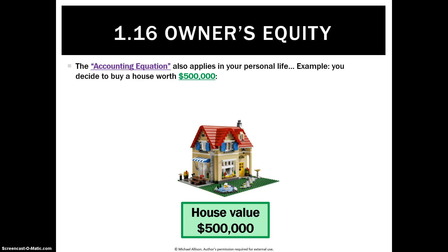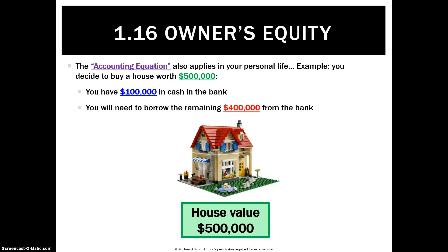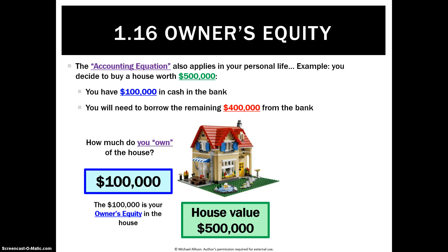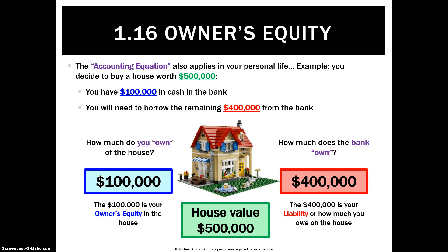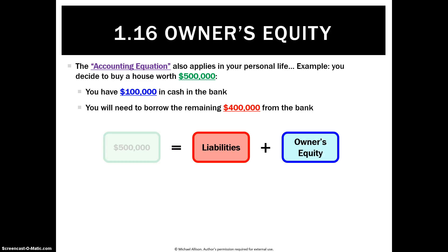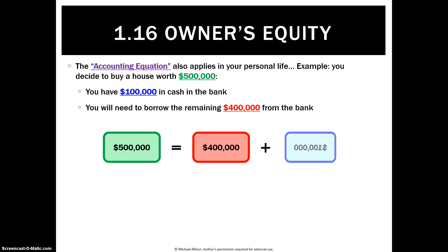The accounting equation also applies in your personal life. At some point you'll hopefully buy a house — let's say it's worth $500,000. You've saved up a 20% deposit, which is $100,000, and you need to borrow the remaining $400,000. So the actual part you own of the house — that's your owner's equity — is $100,000. The bank owns $400,000, which is your liability. Expressing that in the accounting equation: $500,000 asset equals $400,000 liability plus $100,000 owner's equity.